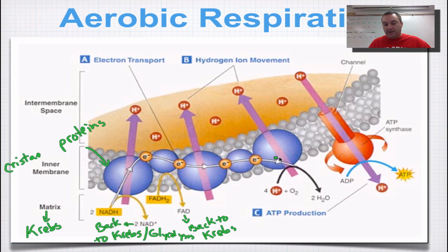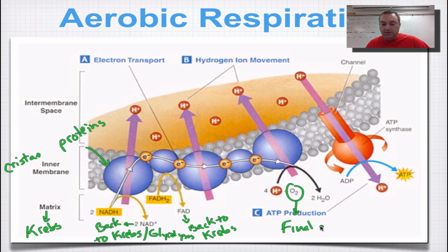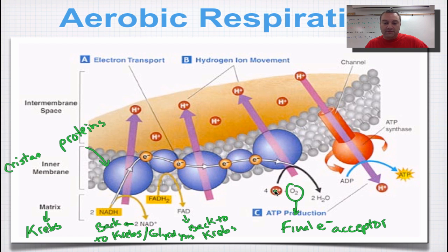These electrons have to get off the chain or we're going to have a backlog, so they come to oxygen. Oxygen is the final electron acceptor. These electrons are going to fall onto oxygen; oxygen is going to become negative. Negative things are attracted to positive things, and hydrogen is positive — you put hydrogen and oxygen together, you get water, which is a waste product.